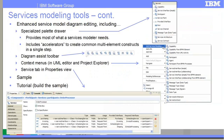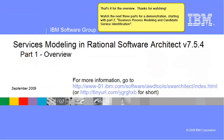Finally, we include a sample service model, including the business process model it was derived from, as well as a tutorial which walks you through the steps of building the sample yourself. That's it for the overview. Thanks for watching. Watch the next three parts for a demonstration, starting with Part 2: Business Process Modeling and Candidate Service Identification.